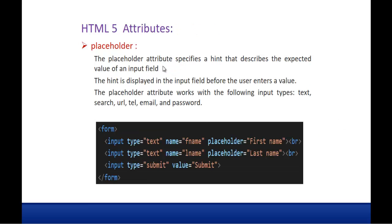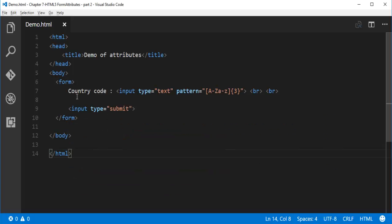Coming to the placeholder attribute. The placeholder attribute specifies a hint that describes the expected value of an input field. The hint is displayed in the input field before the user enters a value, and once the user enters a value, the placeholder will disappear. It's something like a hint telling the user what to fill in that text box.